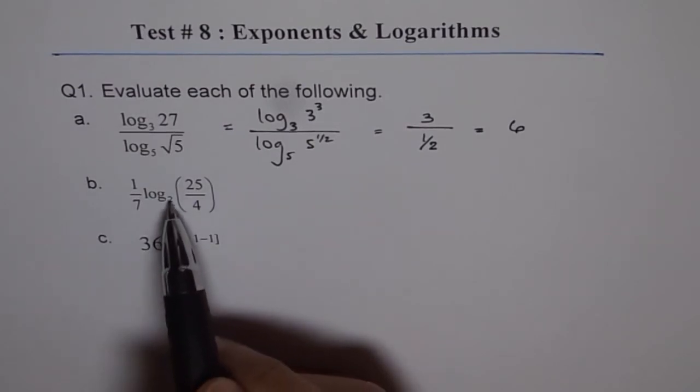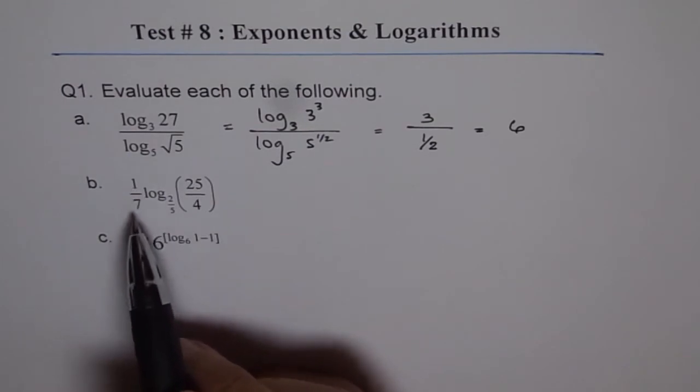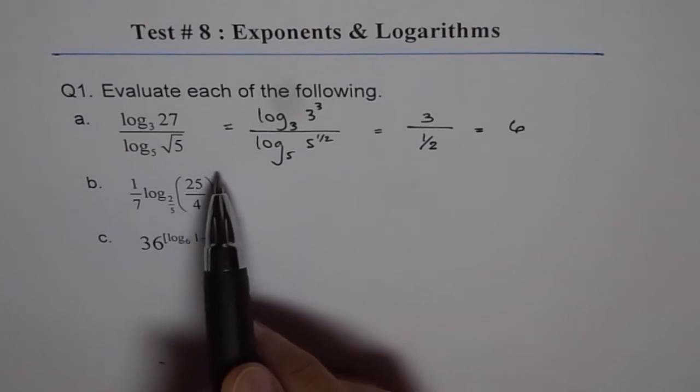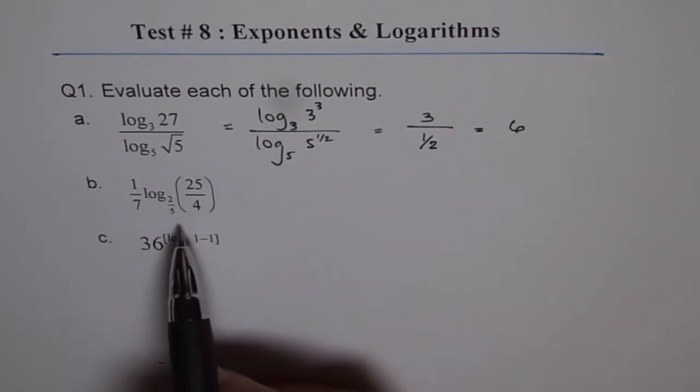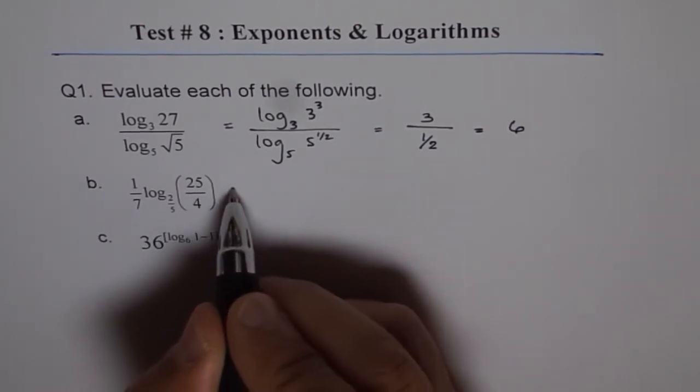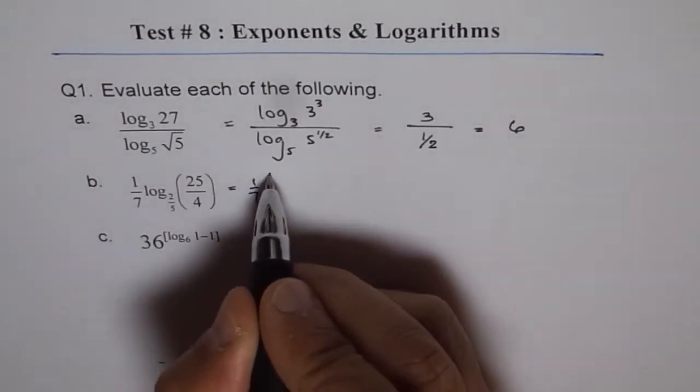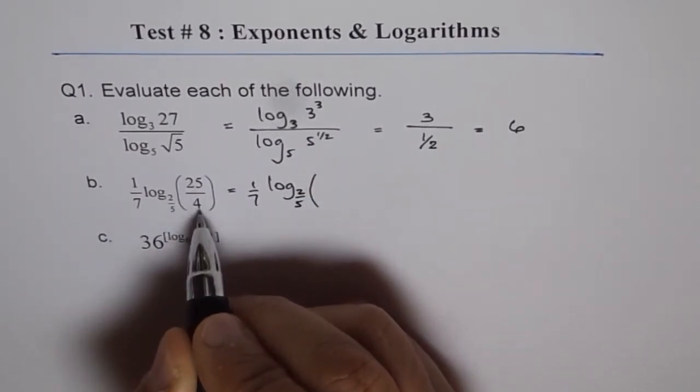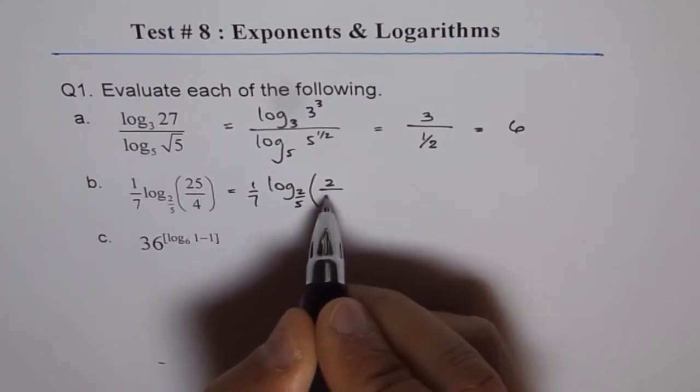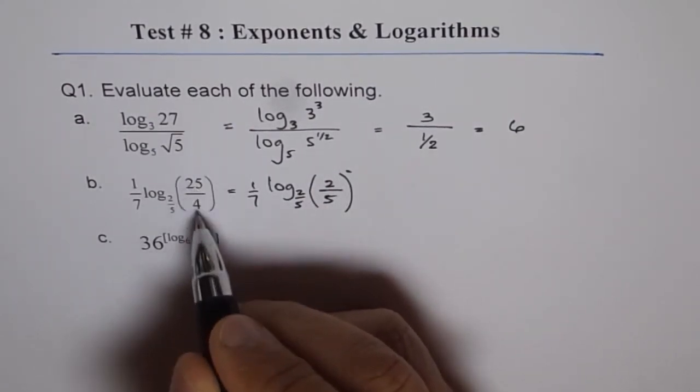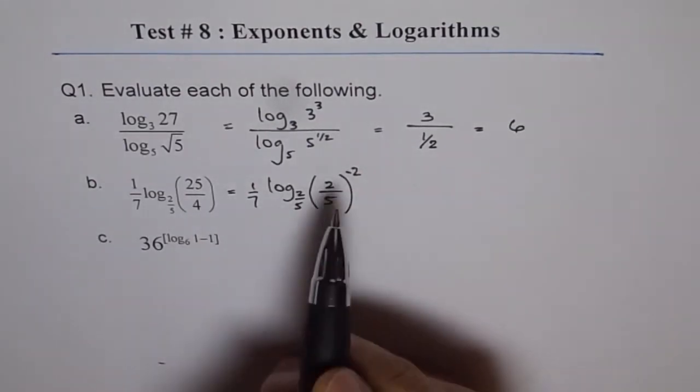Now the second one. Log to the base of 2 over 5 of 25 divided by 4 and it is 1 7th of all this. So basically all this becomes to the power of 1 over 7. First we should write this in terms of 2 over 5. So I can write this as 1 7th of log to the base 2 over 5 of, we can write this as 2 over 5 to the power of minus, because this is reciprocal. Minus 2.